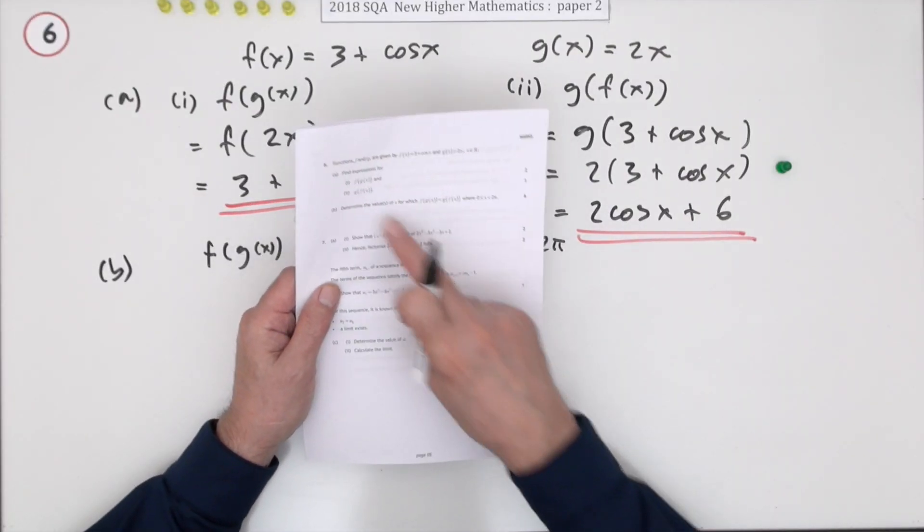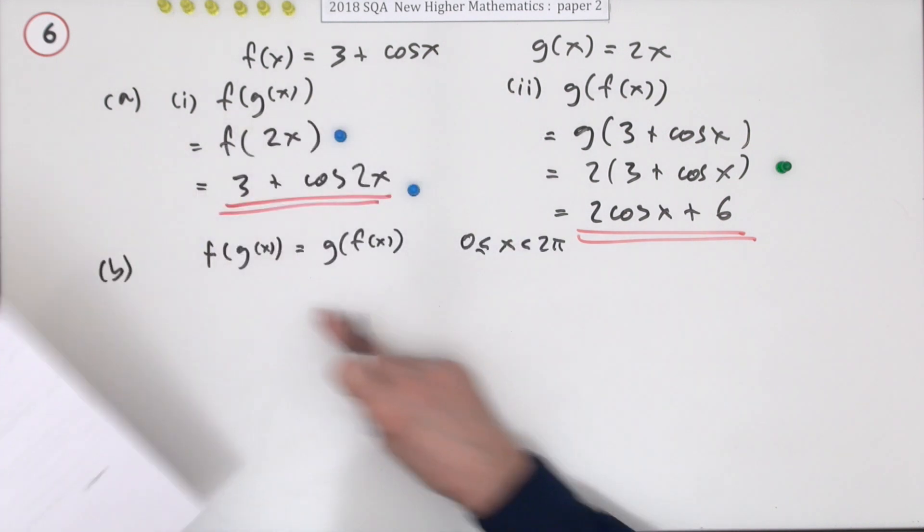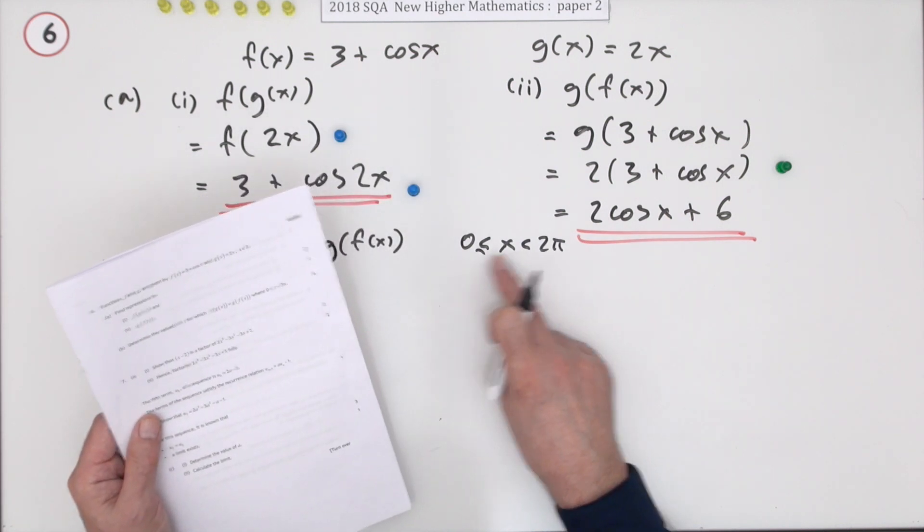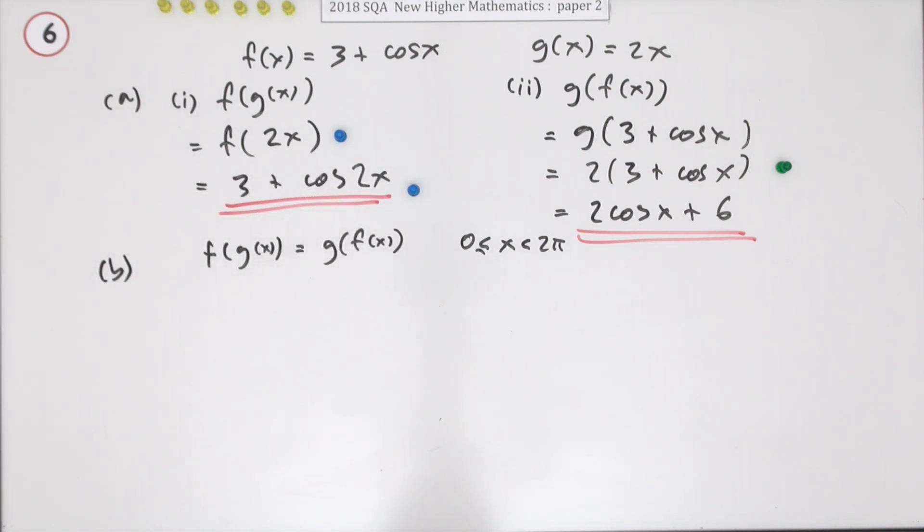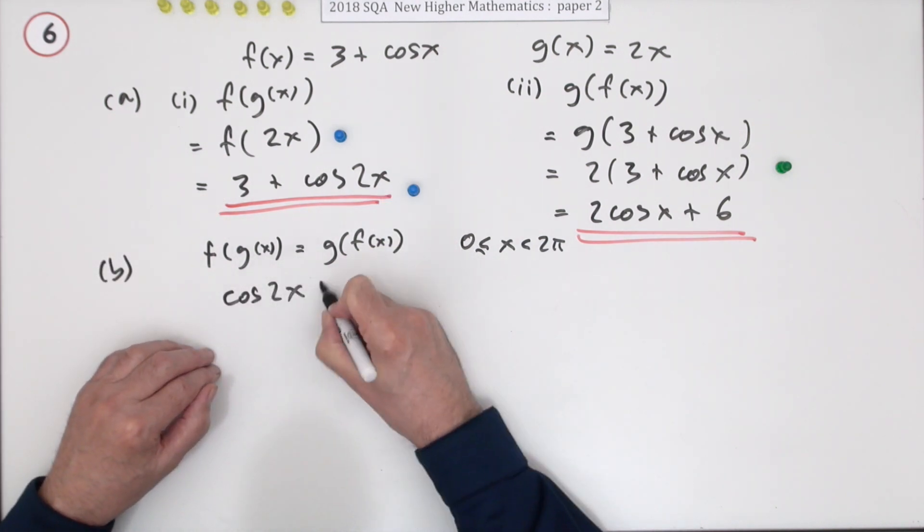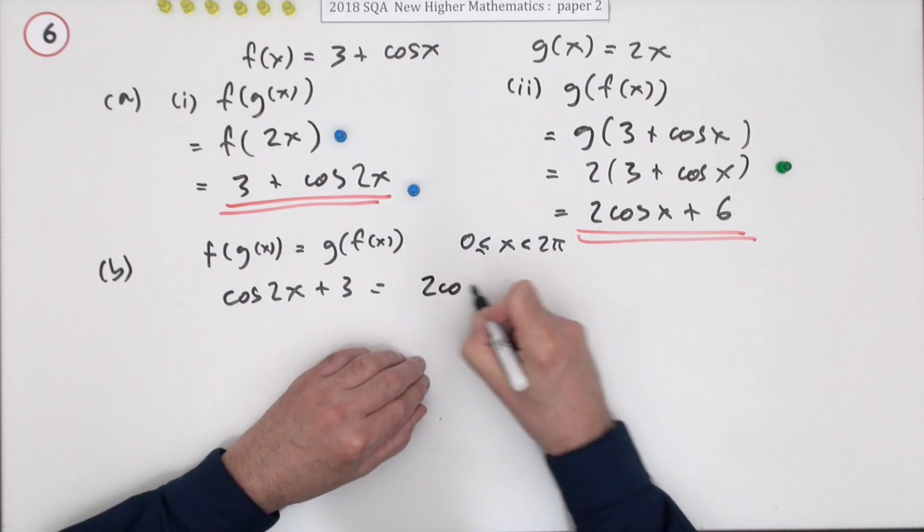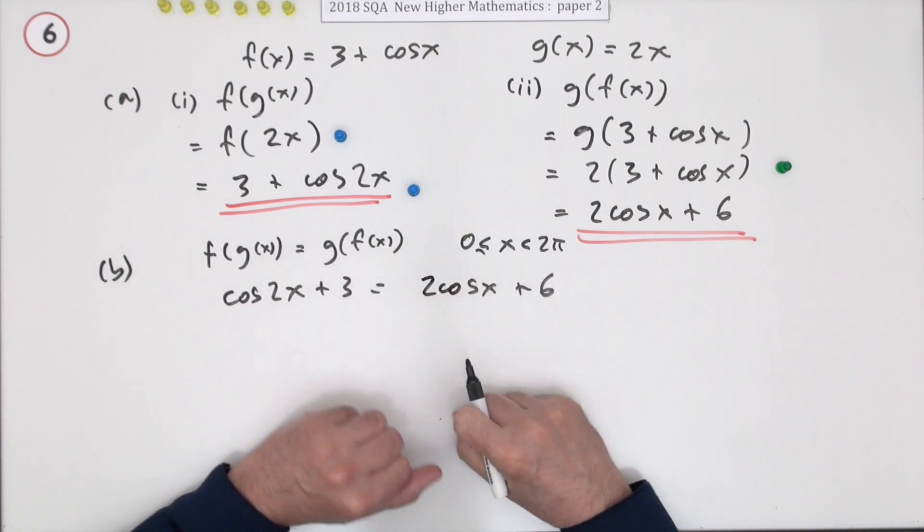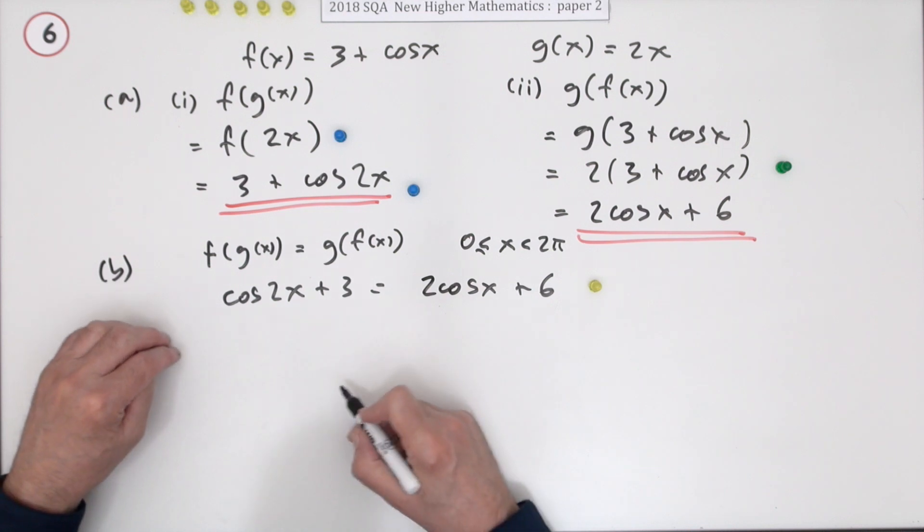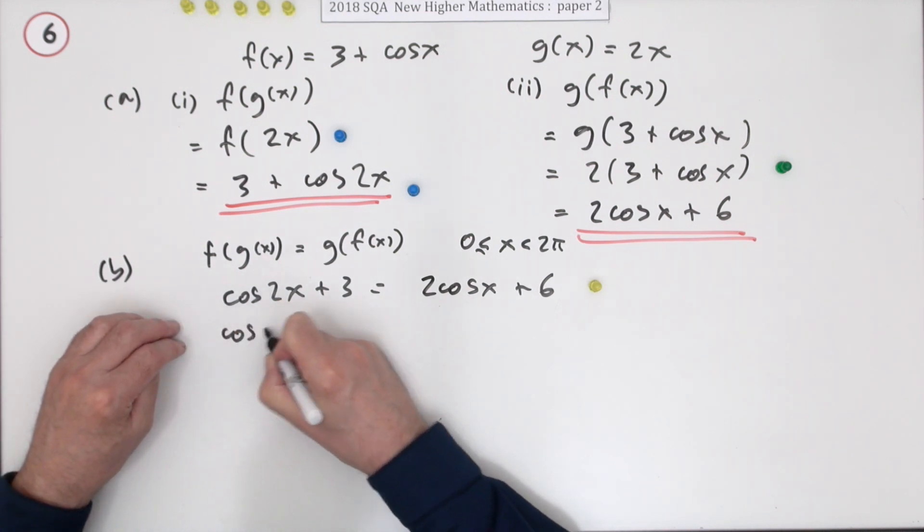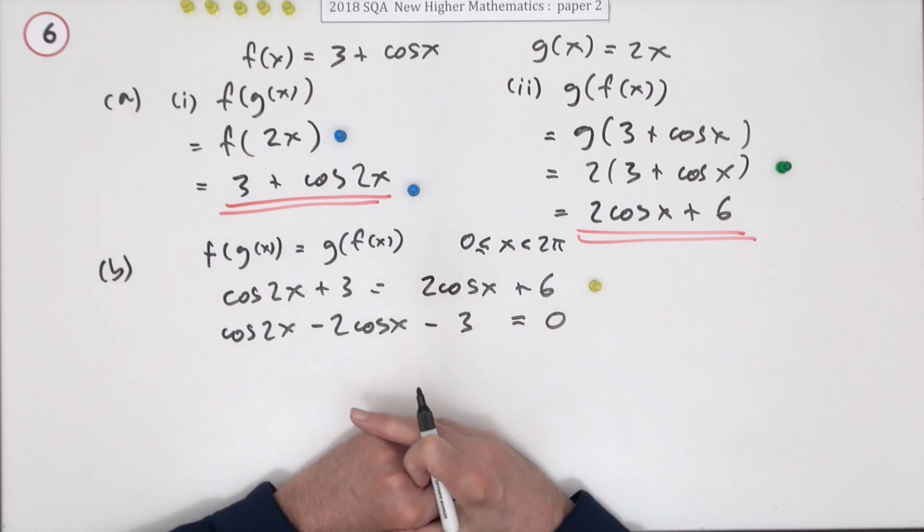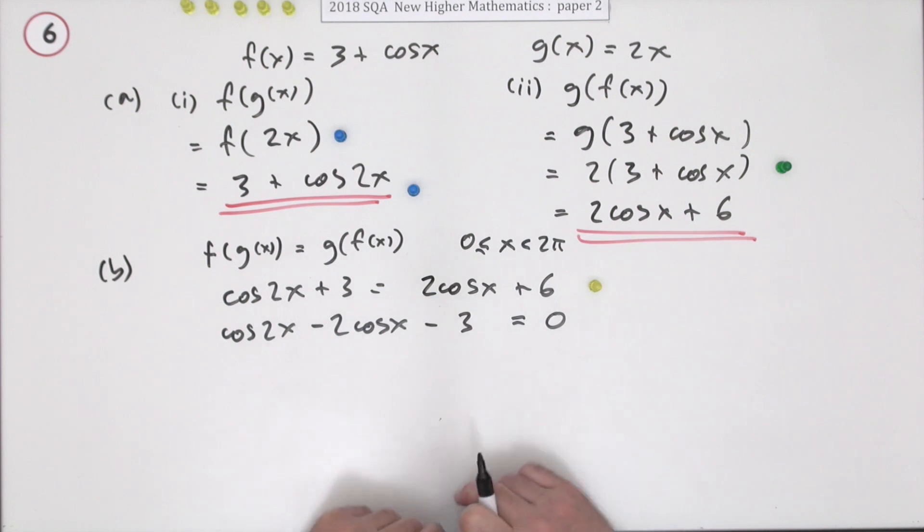Now for part b, determine the value or values of x for which these two expressions are the same. It's in radians, so x will be between 0 and 2π. That means cos 2x plus 3 should equal 2 cos x plus 6. There's one mark for equating the expressions. Now I need to bring it over to one side, so you've got cos 2x minus 2 cos x minus 3 equals 0.